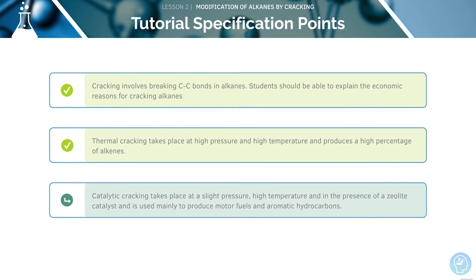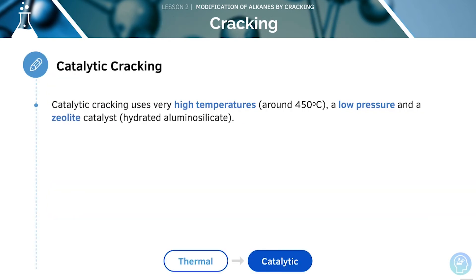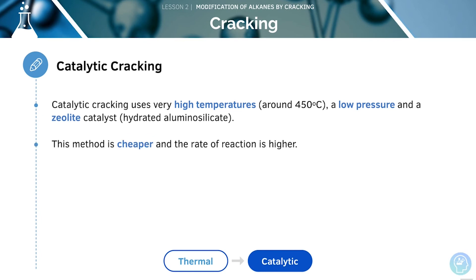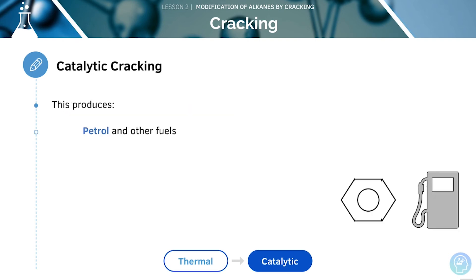Next, we'll be looking at catalytic cracking. The other type of cracking is catalytic cracking. This uses a high temperature, a low pressure and a zeolite catalyst, also known as hydrated aluminium silicate. This is much cheaper and leads to a higher rate of reaction compared to thermal cracking. We can produce petrol and other fuels, and even aromatic hydrocarbons, which contain a benzene ring.